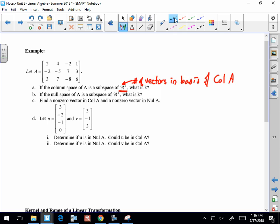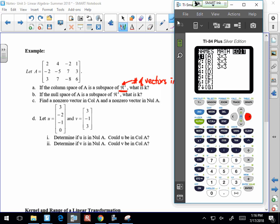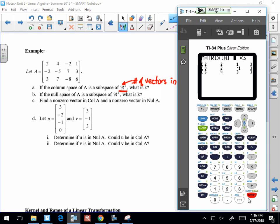Which requires us to row reduce this. And it's not like we haven't done this like a hundred times already. So three by four. All right, so reduced row echelon form.